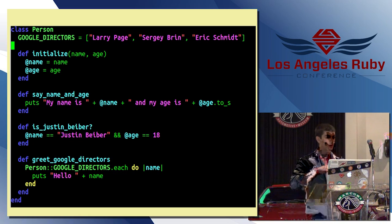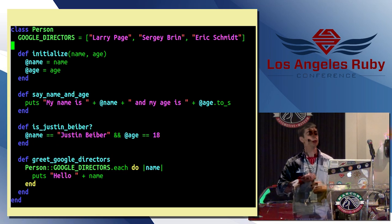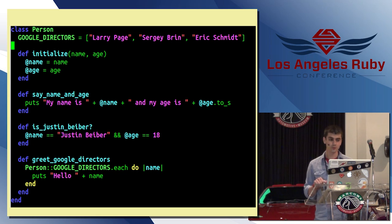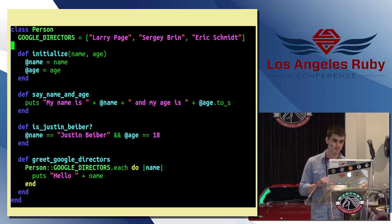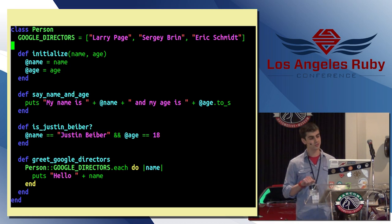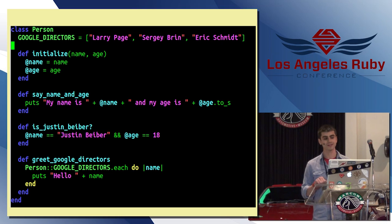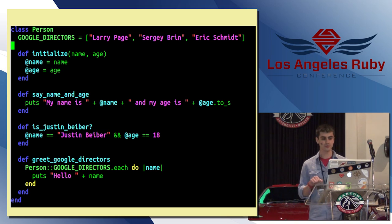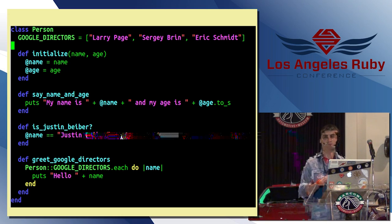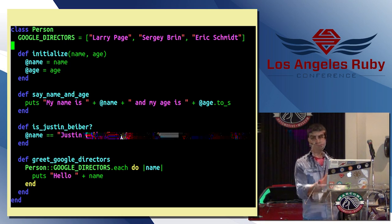You see that okay? All right. So, you basically have a person class. You declare an array of Google directors, and that's a constant scoped within that class. You have a typical initialize method where you set the name and the age, and then you have a few instance methods. The saying the name and the age is just a simple print statement. I consider you Justin Bieber if your name is exactly Justin Bieber and you're exactly 18 years old. And then greeting the Google directors just loops through this array of directors and prints hello for each one.